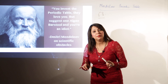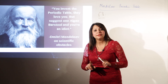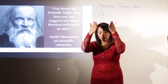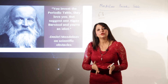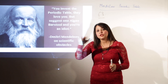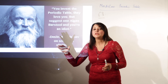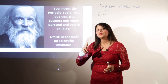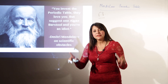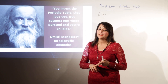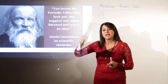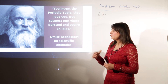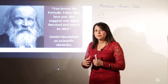Mendeleev arranged the elements in a tabular form called the periodic table. The periodic table is a tabular chart where the vertical columns are called groups and the horizontal rows are called periods. He was able to classify all 63 elements in this periodic table comprising periods and groups.